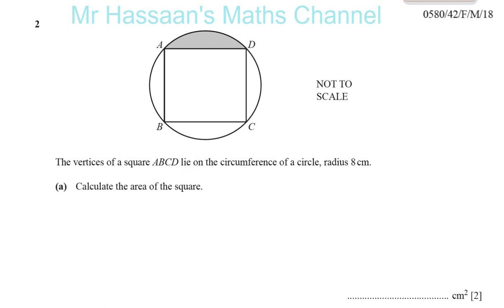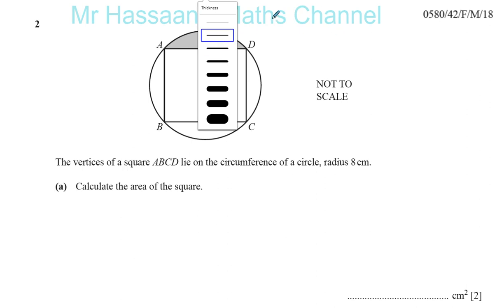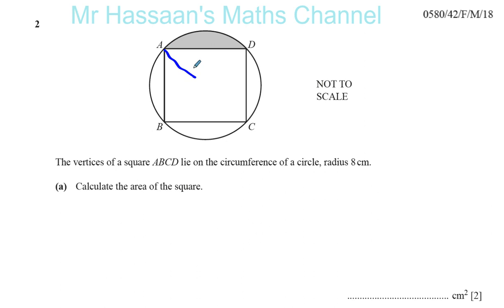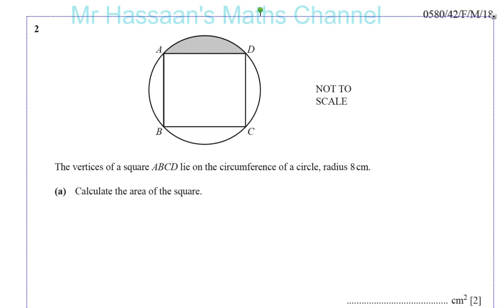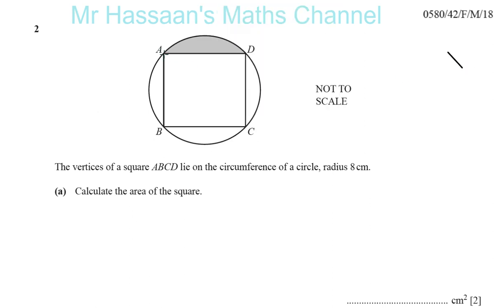There are multiple ways we could do this, but there's one way that is quicker and simpler than the rest. I'm going to join the opposite vertices — A to C and B to D. The radius is 8 cm, so the diameter is 16 cm, meaning AC is 16 cm and so is BD.